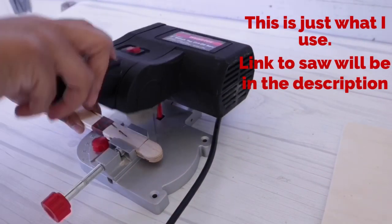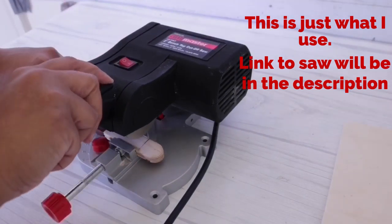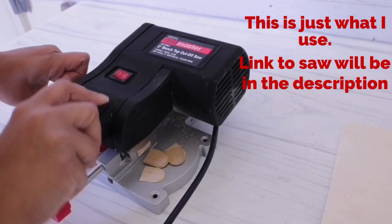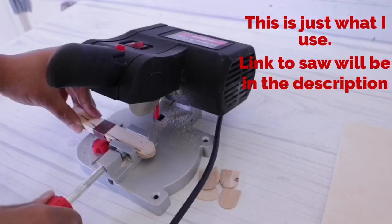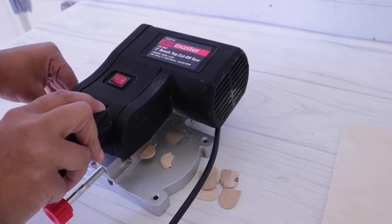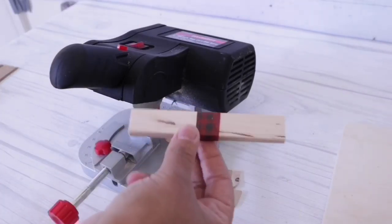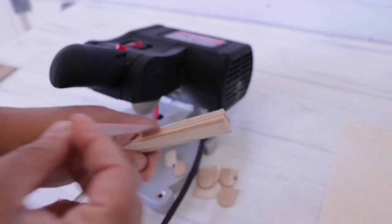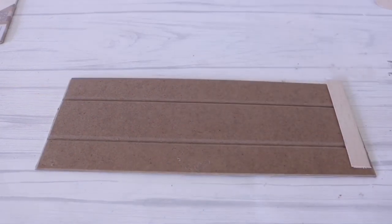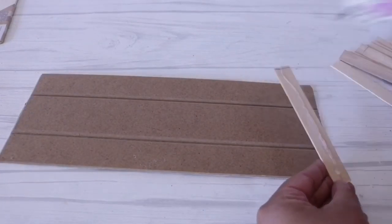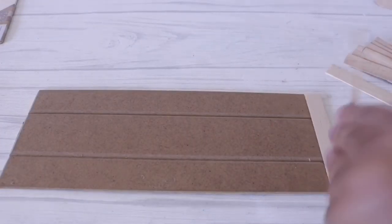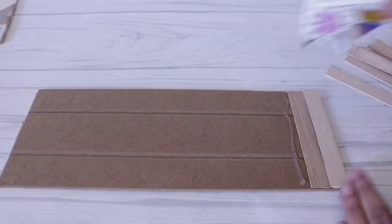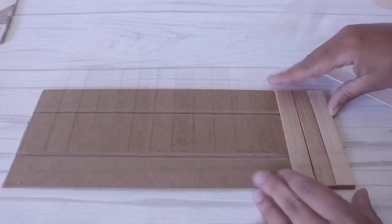I tape them together using some washi tape and I'm going to use my little mini saw. Like I said you don't need this, but what I do is check to see where the saw is going to cut, then make my cut. This just makes the process go by a lot easier when you're doing small wood projects. Then I take off the tape and all my pieces are nice and even. I'm going to leave the link for that below.